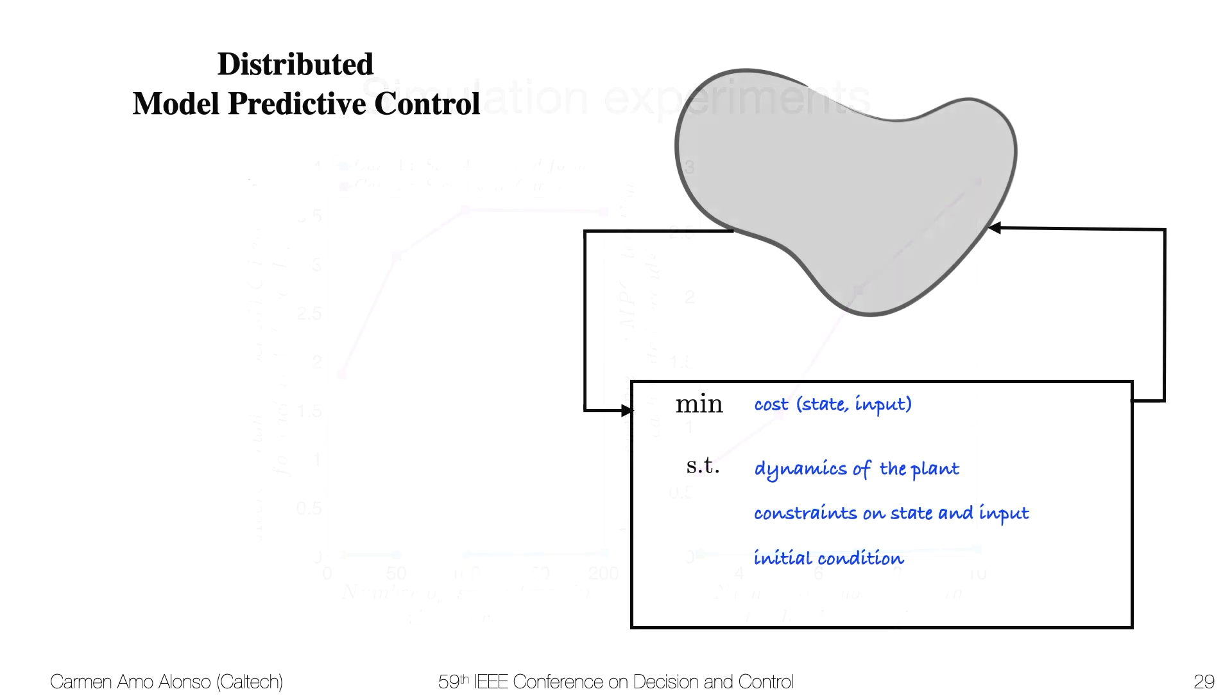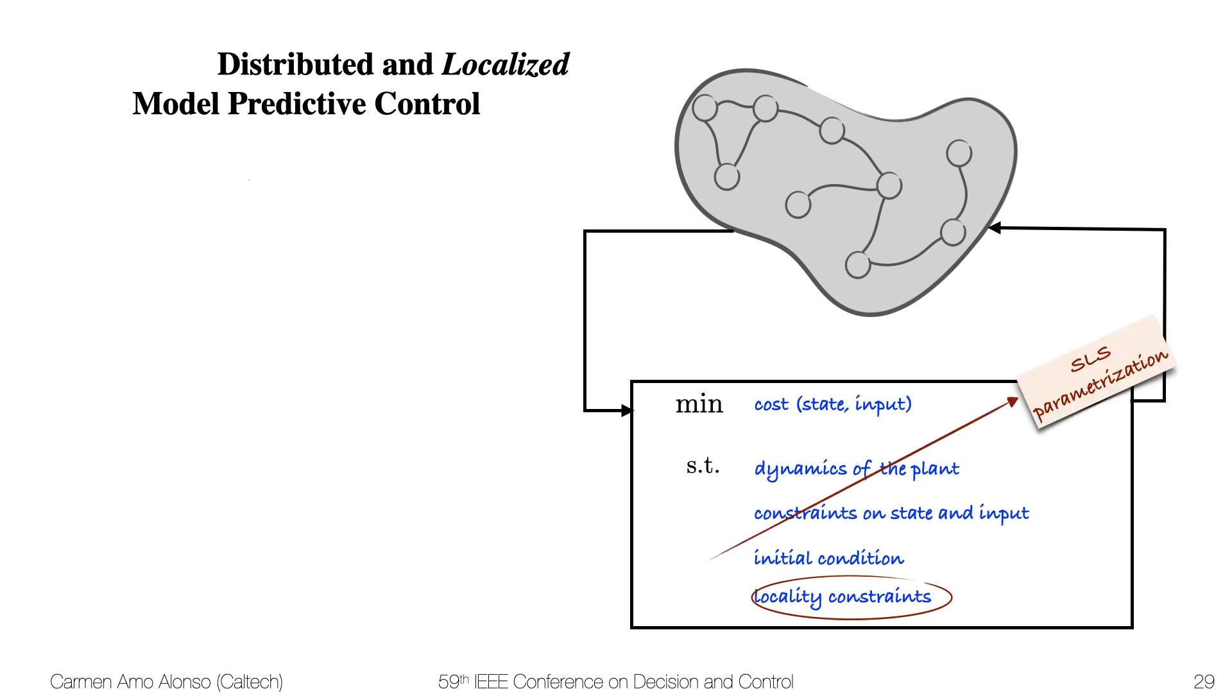Just to recap, we wanted to work on distributed MPC for large networks, and in order to capture the structure, we introduced locality constraints. So that made our approach distributed and localized. Because this problem, as stated, was hard to tackle, we resorted to the system-level synthesis parametrization.